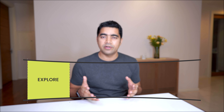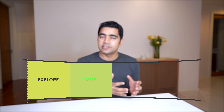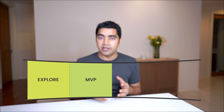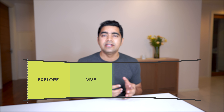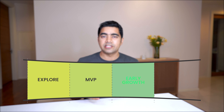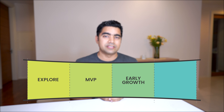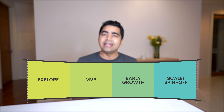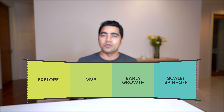The innovation funnel I developed has four stages. The first stage is called Explore, the second is MVP — Minimum Viable Product, the third is Early Growth, and the fourth is Scale or Spin-off. Let me explain each part so you understand the full framework and how to apply it in your personal or professional life.